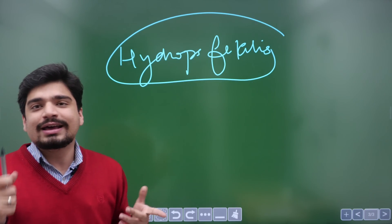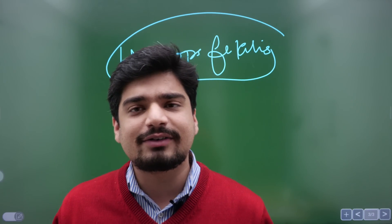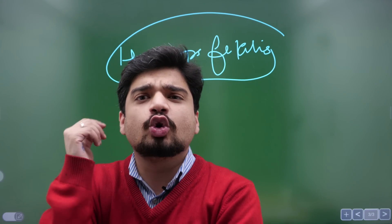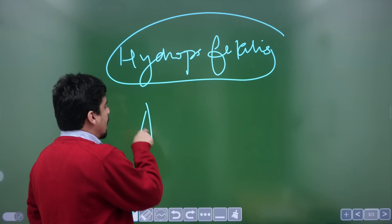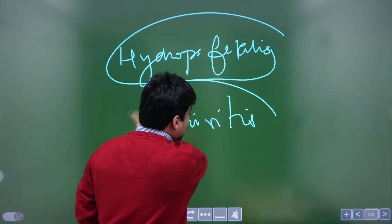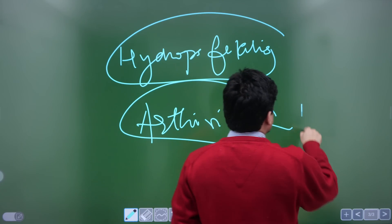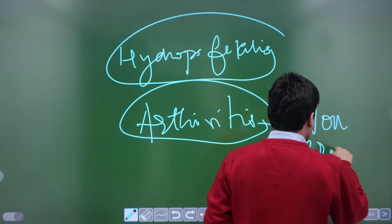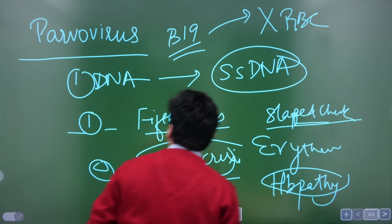Another thing it is known to cause, which a lot of viruses cause — remember whenever you are having a viral fever, like Dengue, it gives a lot of joint pain. So Parvovirus B19 is also known to cause arthritis, just like Chikungunya. Dengue has more of arthralgia, but Parvovirus can also cause arthritis. Remember, this arthritis is non-erosive in nature.